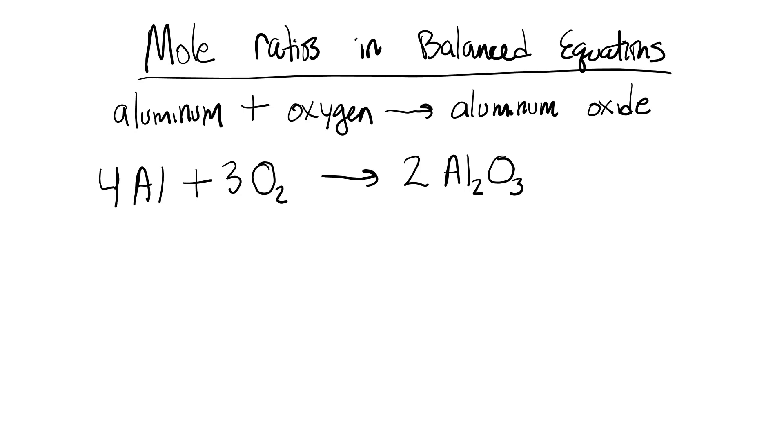Now, I have a question for you. If I were to multiply each of these values by 12, so now I have 48 aluminum. If I multiply this by 12, I'm going to have 36 oxygen molecules. And then I multiply this by 12. The ratio between all those atoms and elements is the same. It makes sense, right?